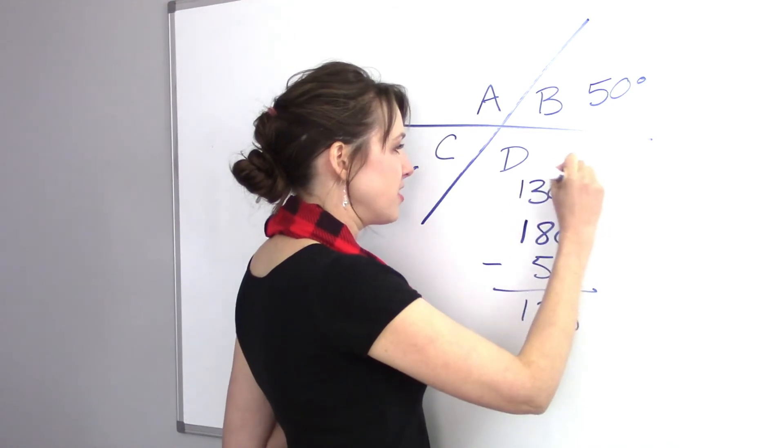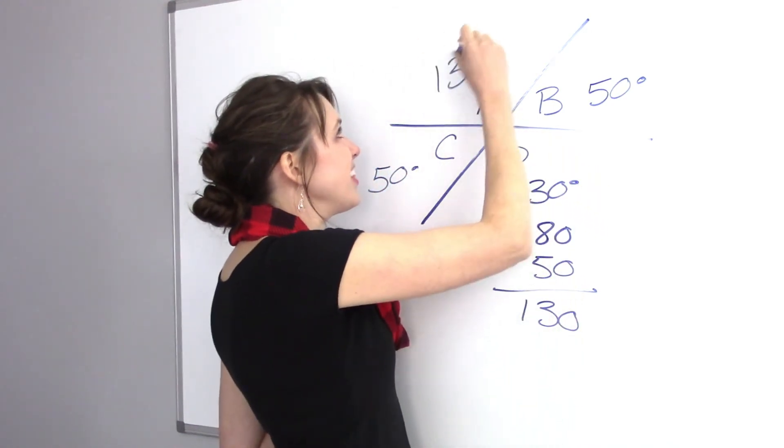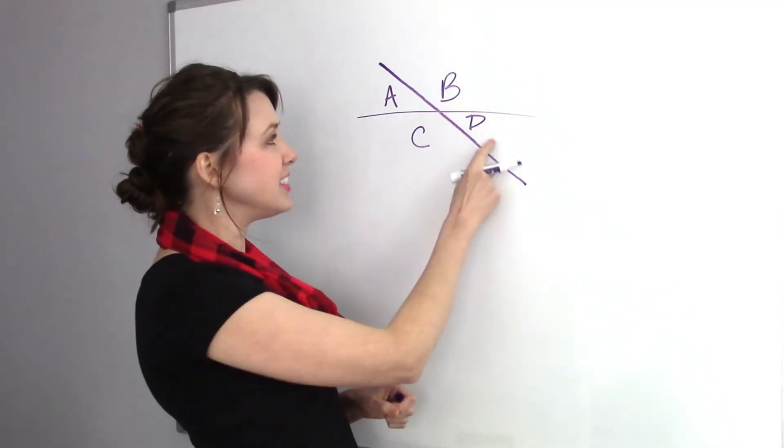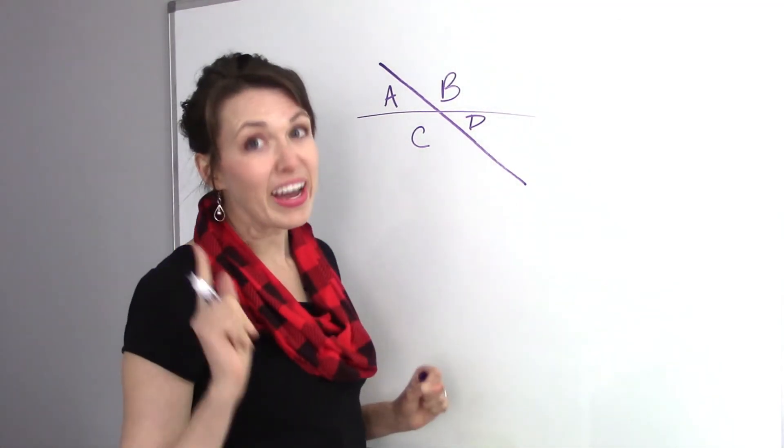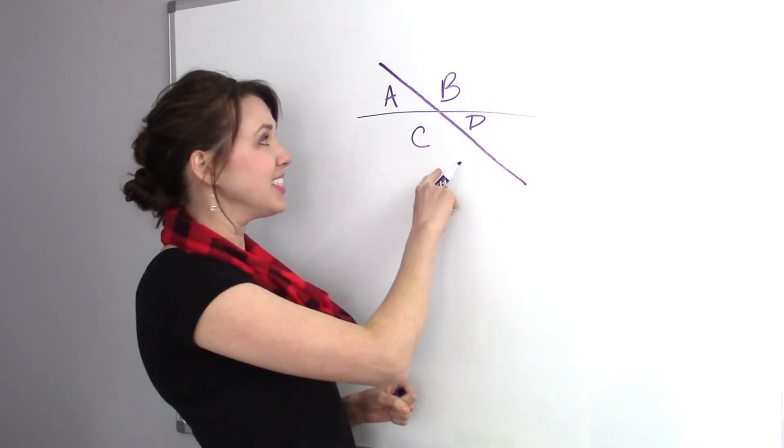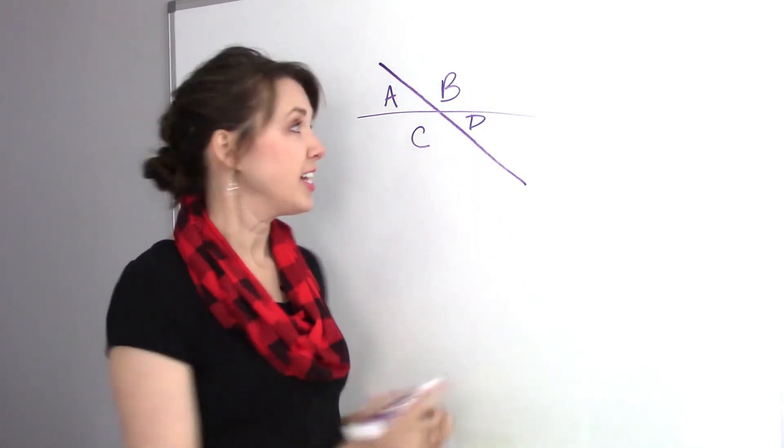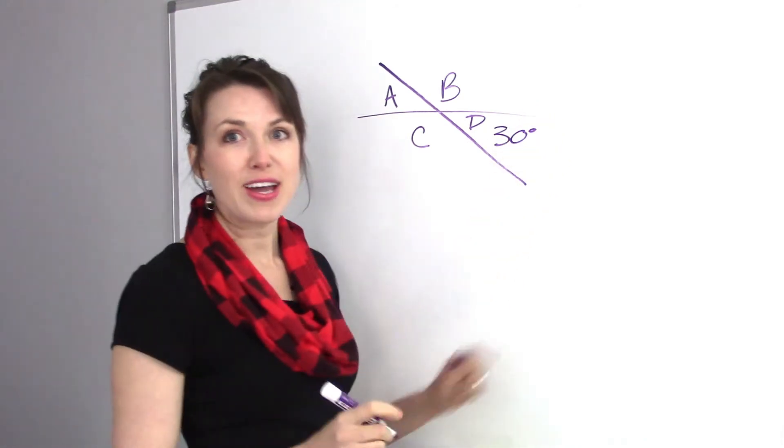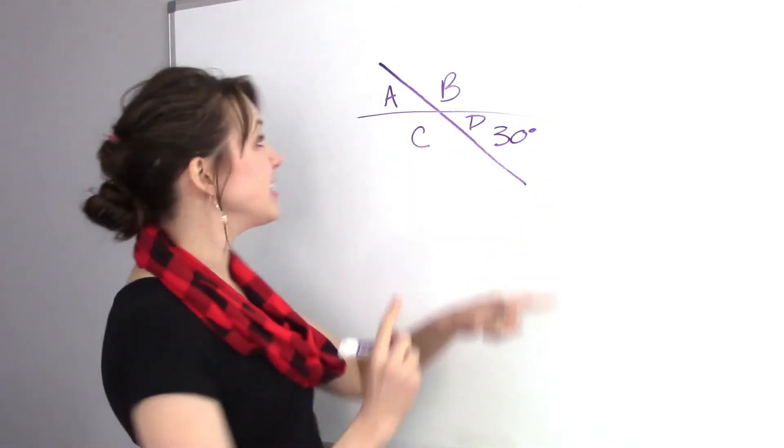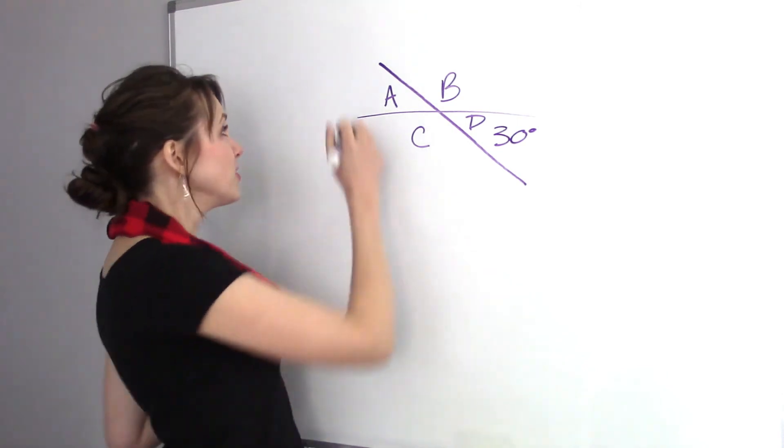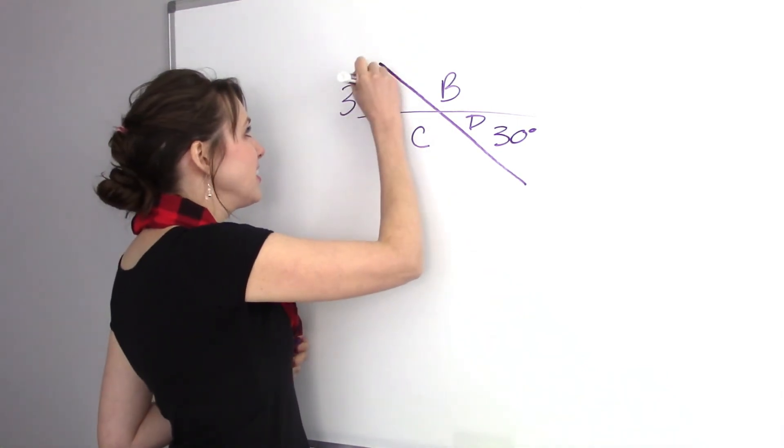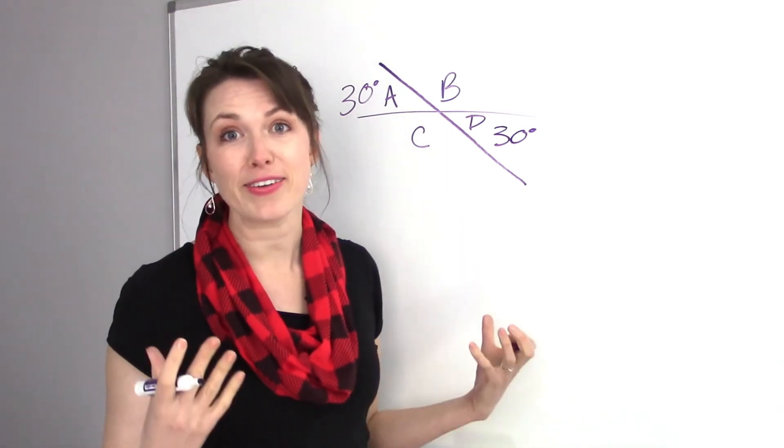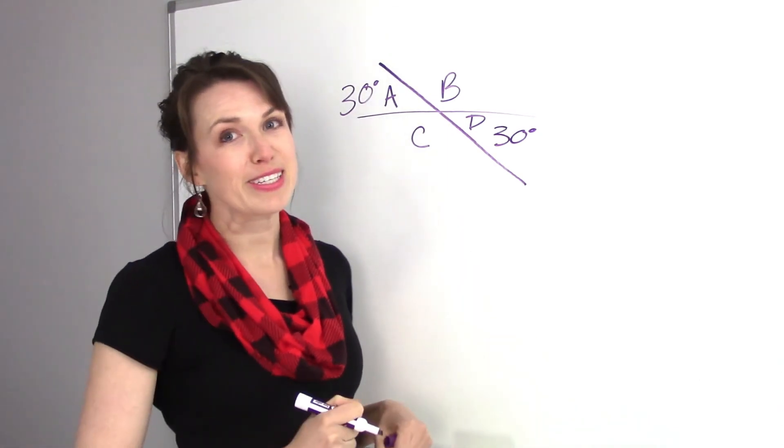So D and A both equal 130. So 130, 130. All right. Let's do this one here. We've got A and D are both acute. B and C are both obtuse. Now here, D equals 30 degrees. So if D equals 30 degrees, A also equals 30 degrees, right?